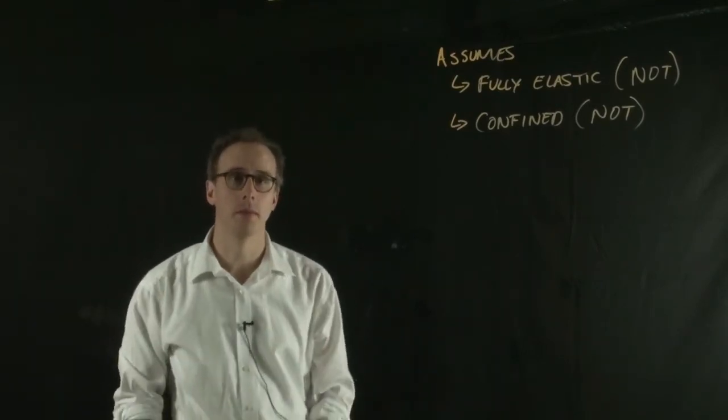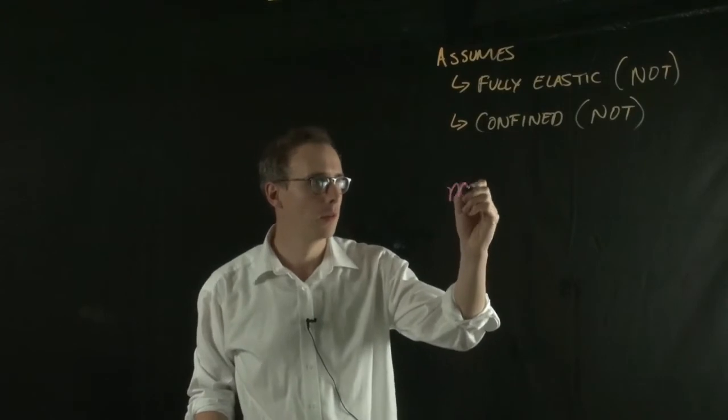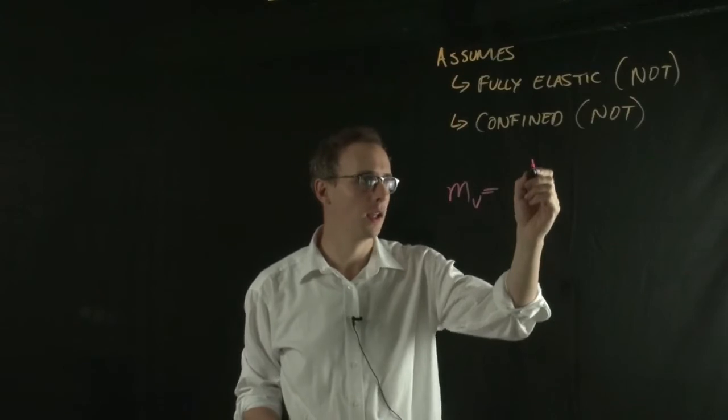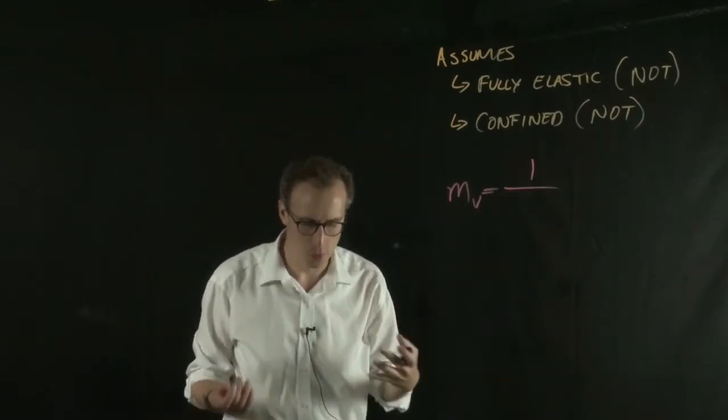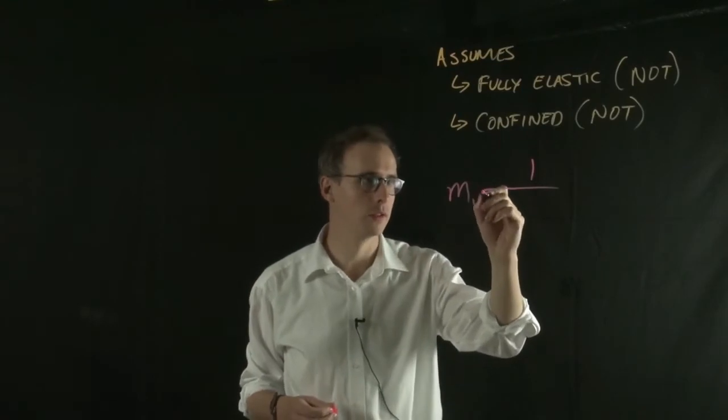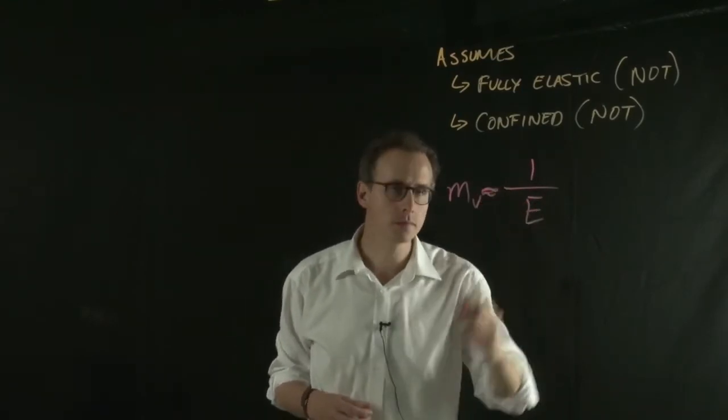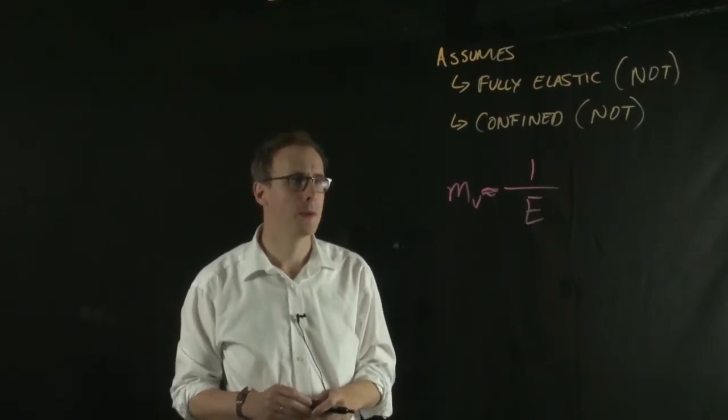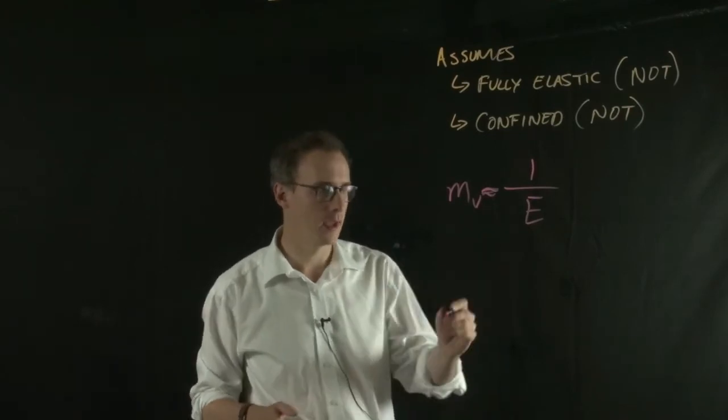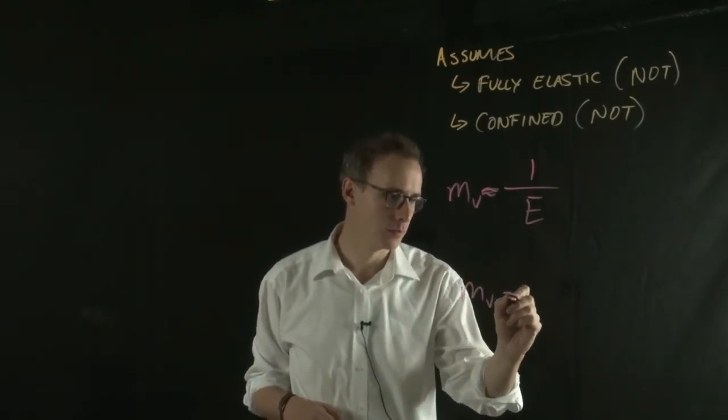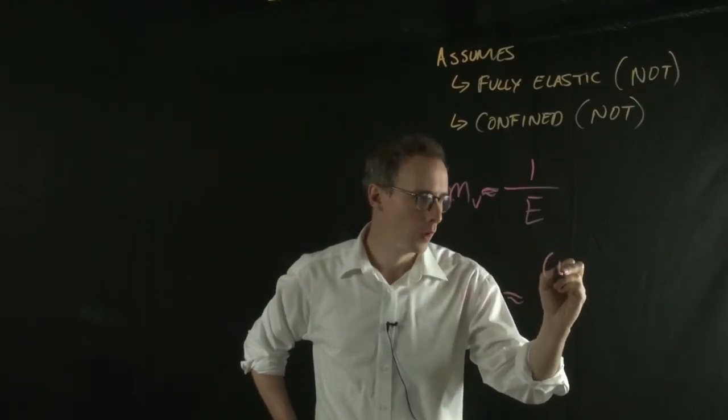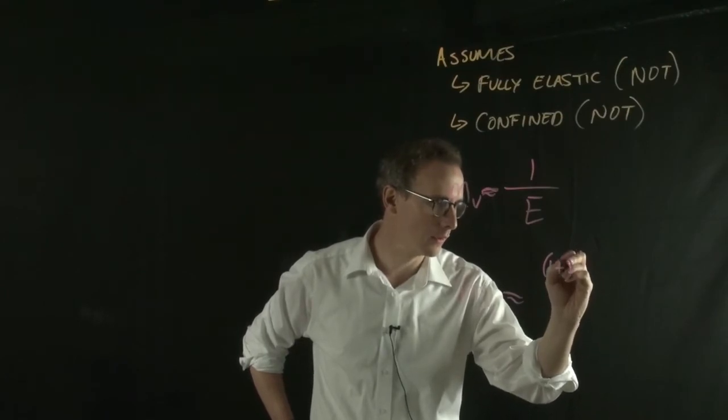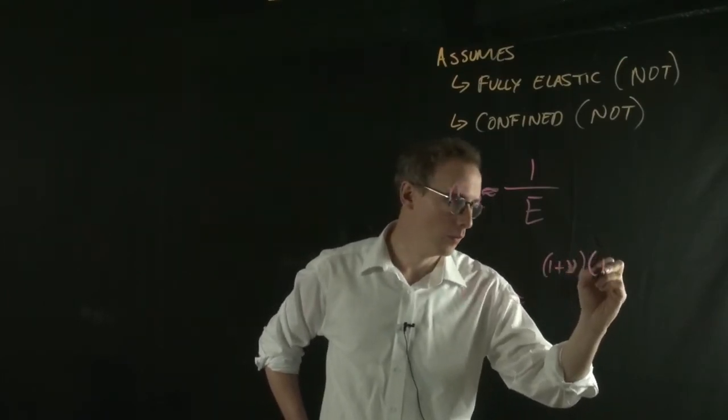A way to represent that mathematically is your MV value has inverse stress units. For fully confined cases, it's almost equal to 1 over Young's modulus of elasticity. In unconfined cases, your MV value involves a factor with 1 plus Poisson's ratio and 1 minus 2 times Poisson's ratio over Young's modulus.